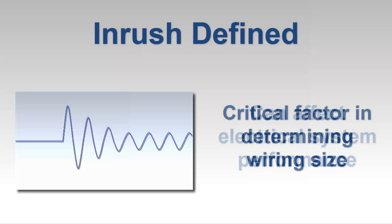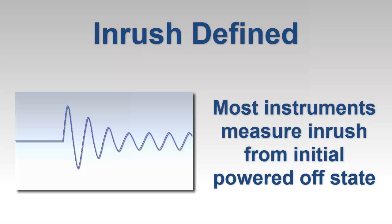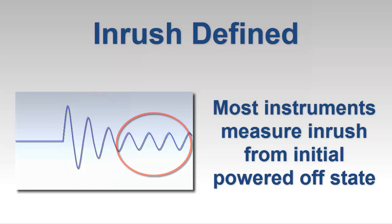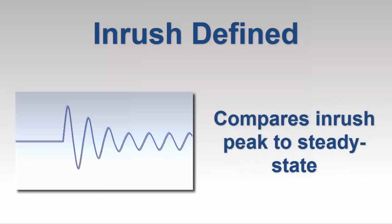Inrush is also a critical factor in determining the proper sizing of your network. Most instruments can only measure inrush in systems that are initially powered off. These instruments measure current and voltage starting with the initial powered down state, through power up, and finally steady state operation, which usually occurs within the first few seconds after startup. The instrument then compares the power up peak to steady state, and depending on the threshold criteria used, displays the inrush reading.